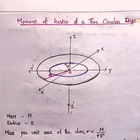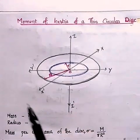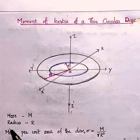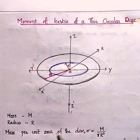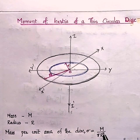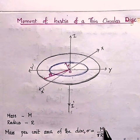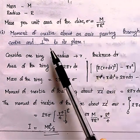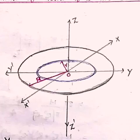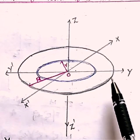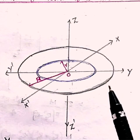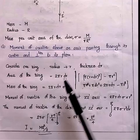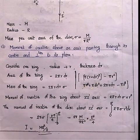Now let us learn the moment of inertia of a thin uniform circular disk of mass M and radius R. The mass per unit area is σ = M/(πR²). We find the moment of inertia about an axis through its center, perpendicular to its plane. The disk is composed of a large number of concentric thin rings, one such ring having radius r and thickness dr, with area 2πr·dr.